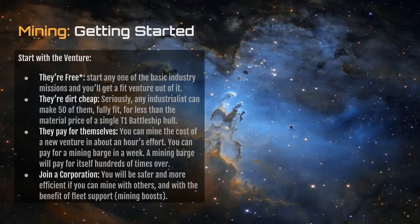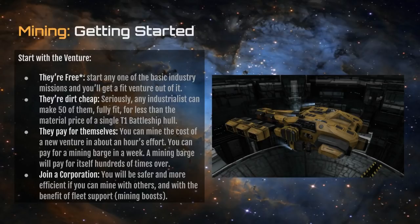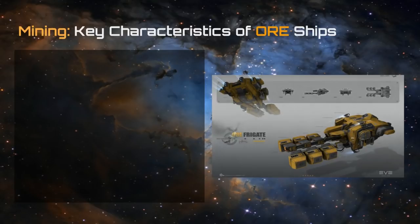This is where we get into talking about joining a corporation. You will be safer and more efficient if you can mine with others with the benefit of fleet support and mining boosts, which we'll talk about in a minute. Now the Venture — beautiful little Tonka truck that it is. In fact, more than half of my Ventures are named Tonka, harkening back to my childhood in the eighties. But it's more than just their distinctive yellow color we need to look at. We can talk about the distinguishing characteristics — most ore ships have some variation of the following.